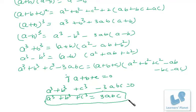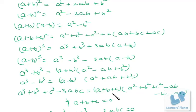All of these results, which we learned in junior classes, are known as algebraic identities because they are true for any variable. Whether we use a and b, or x and y, or any numeric value, the results hold true. We use these algebraic identities in factorization of algebraic expressions and polynomials, and also to find products of algebraic expressions.